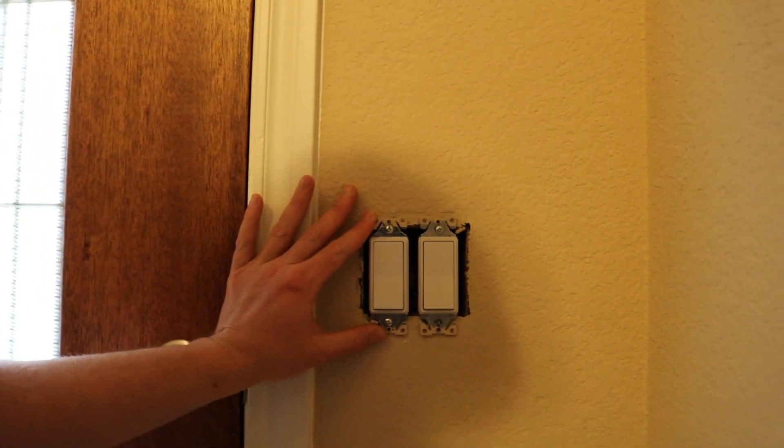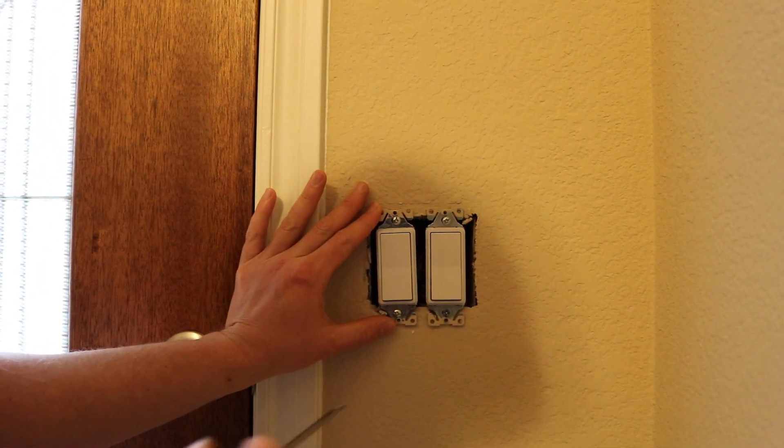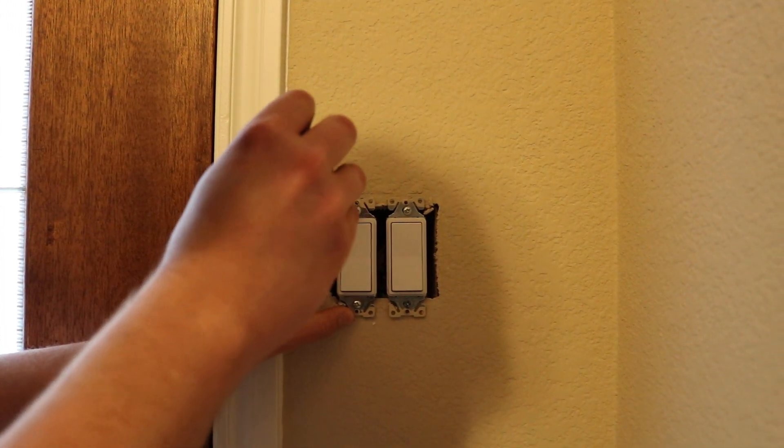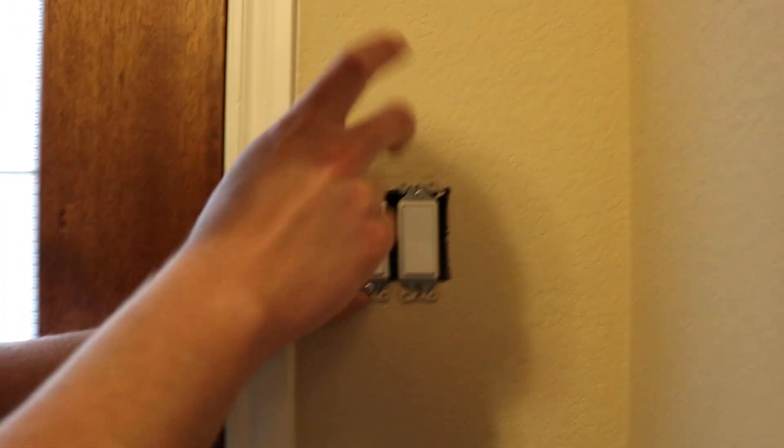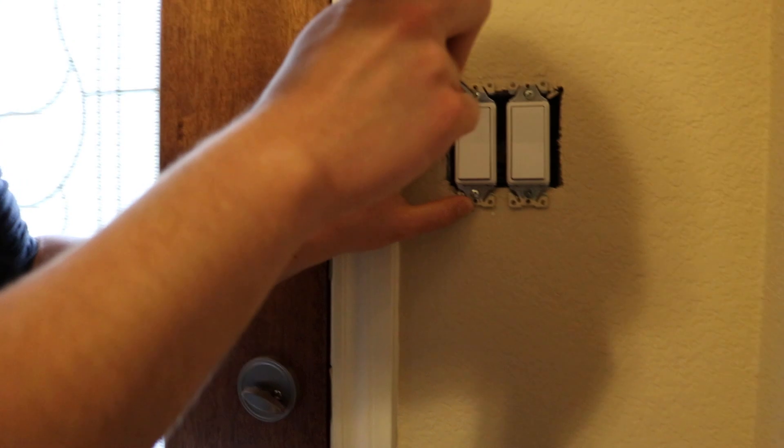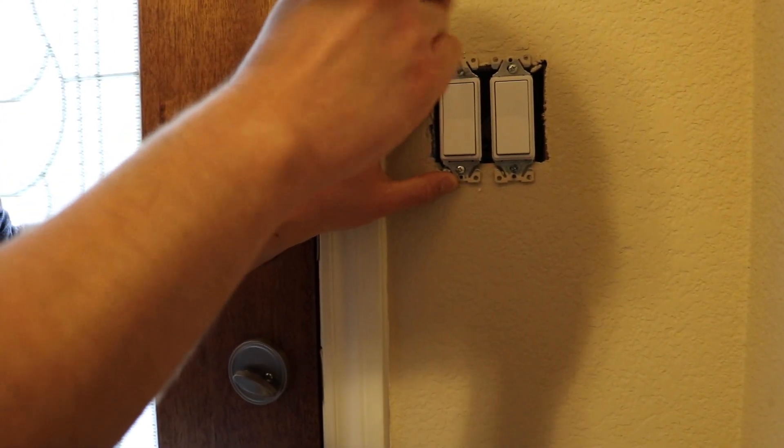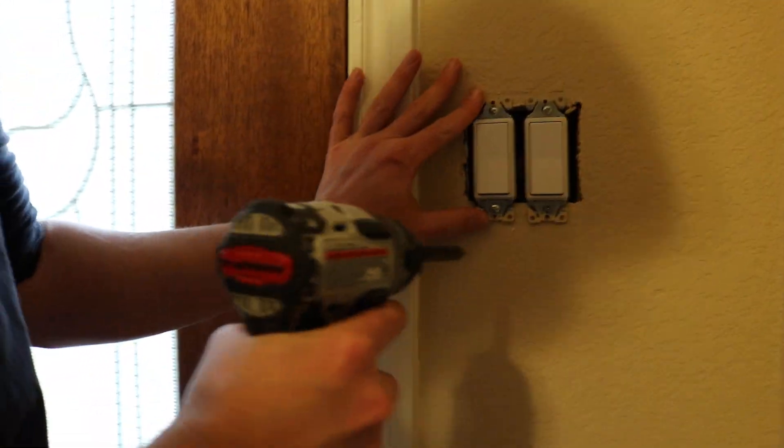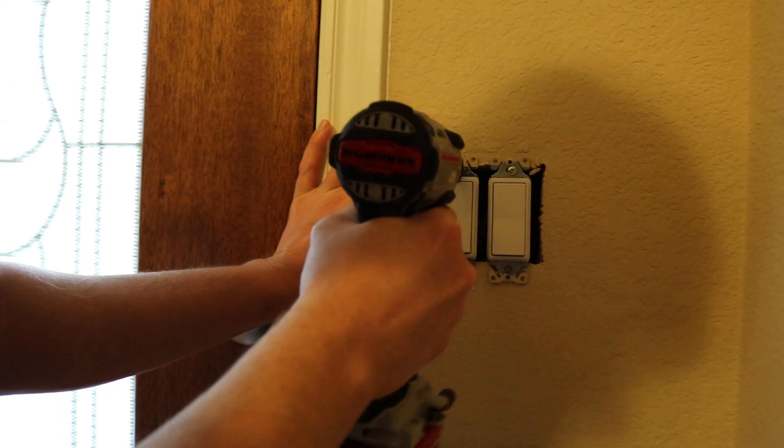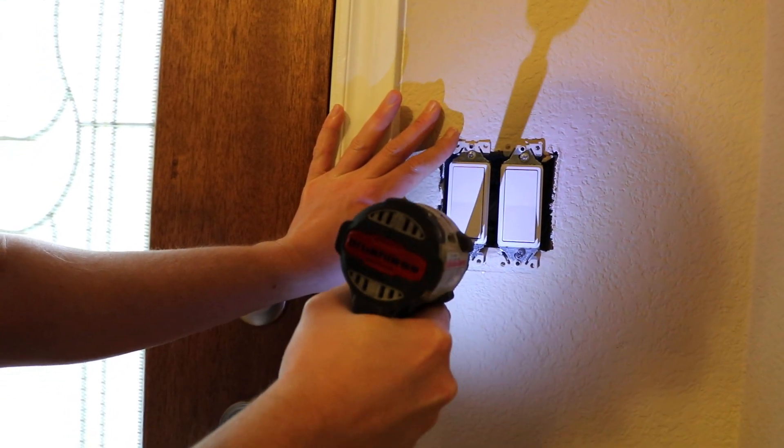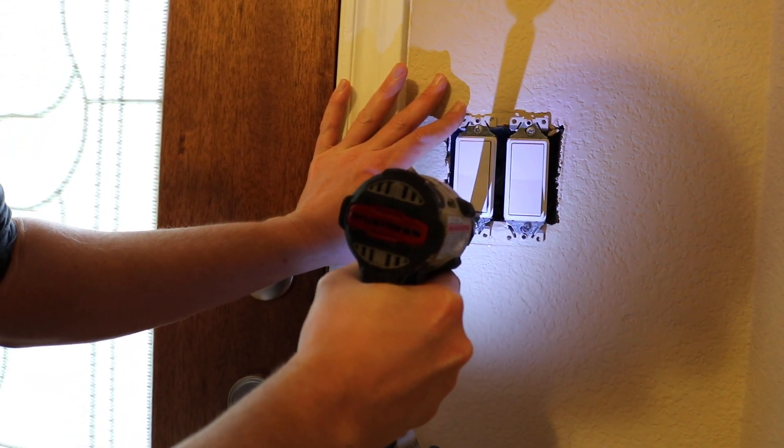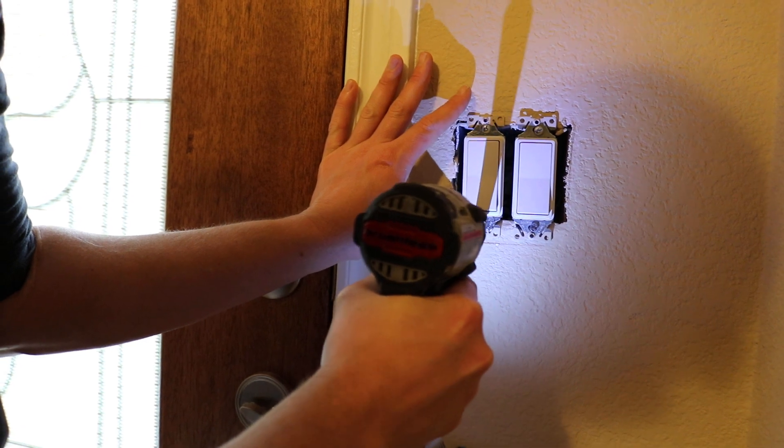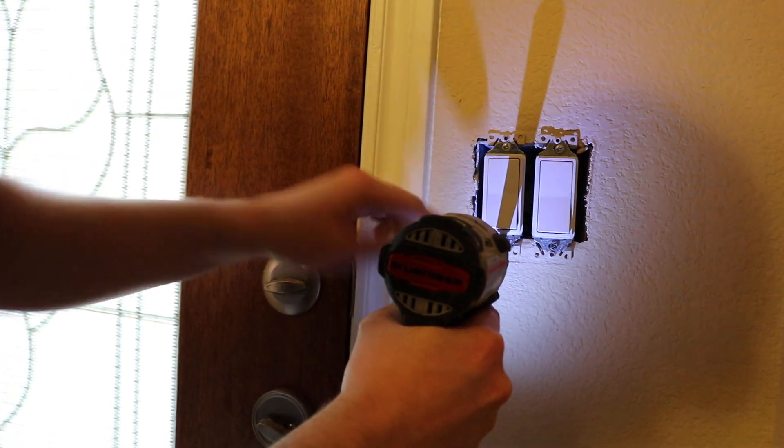First thing you want to do is just start with one of the devices and you want to center up the mounting screw. You want it to be centered in the hole that it goes through to attach the device. You can actually use an impact, it's a little bit quicker. The trick here is you want to get it good and snug on the wall but you don't want to over tighten it to where you're actually denting the drywall.